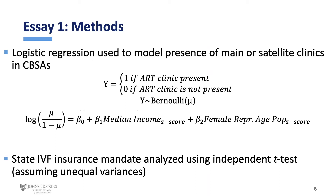The next method I used was logistic regression to model the presence of satellite clinics or main clinics in a CBSA. Then I used an independent t-test to look at state IVF insurance mandates — each state has decided whether or not to pass mandates requiring insurers to cover IVF and ART. Some states have, and it's about 15 at this point; when I started it was about 11. There's been a lot of recent movement on IVF insurance mandates, and there's a question as to whether they affect the number of clinics in a state.